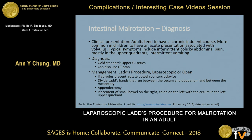Malrotation is typically diagnosed in childhood, although the incidence of diagnosis in adults is reportedly as high as 40%. Adults tend to have a chronic indolent course with intermittent colicky abdominal pain and vomiting. It is more common in children to present acutely associated with volvulus. The gold standard for diagnosing malrotation is an upper GI series, but a CT scan is also commonly used.